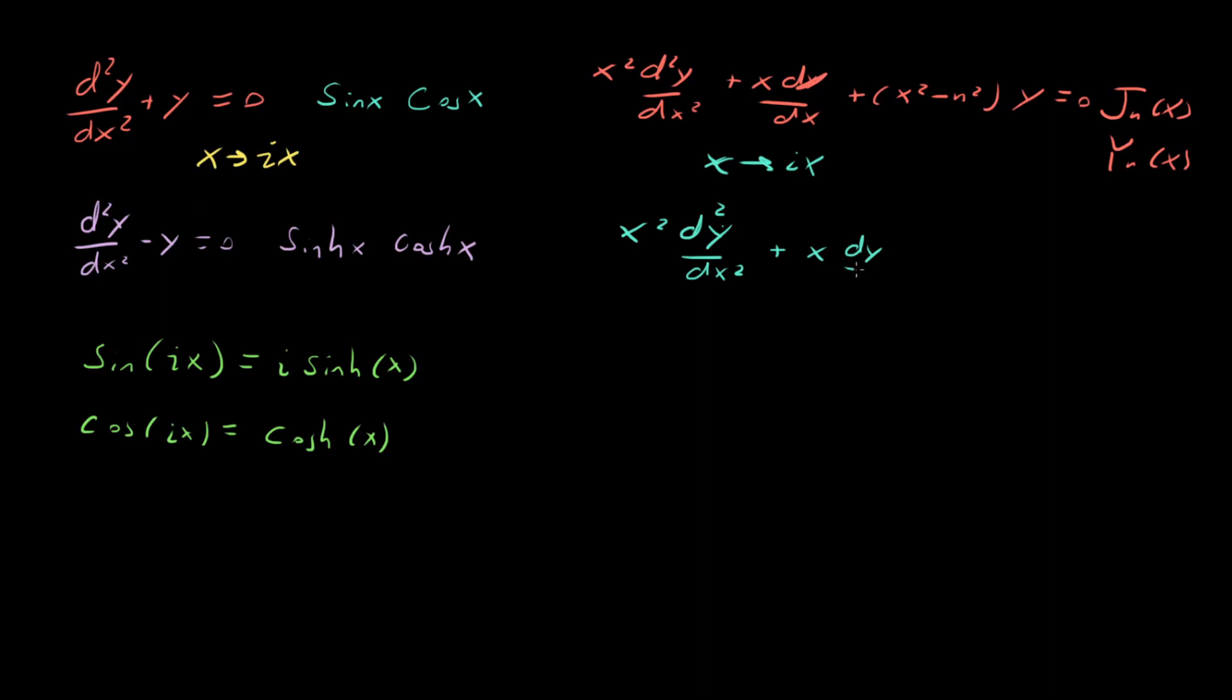But then for this last term, we have an x² right here. And so that x² is going to become minus x². And so we have -x² - n²y = 0.